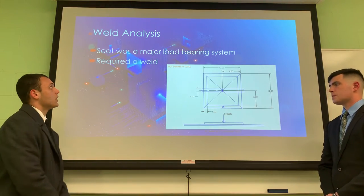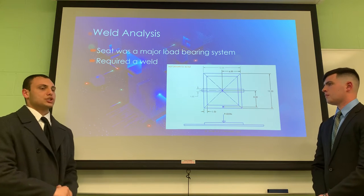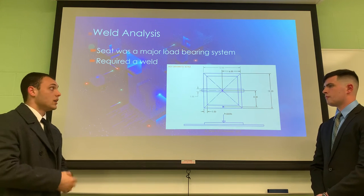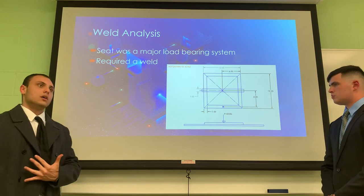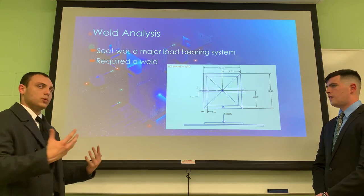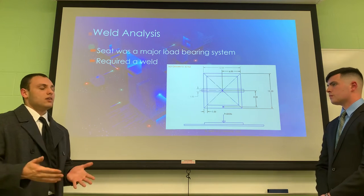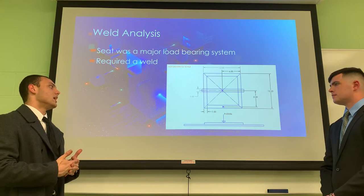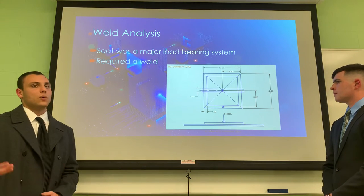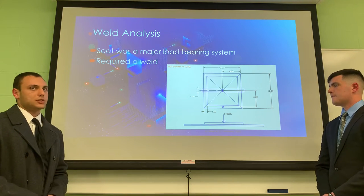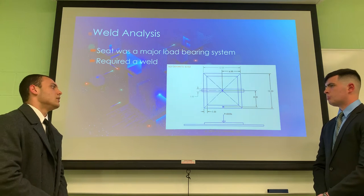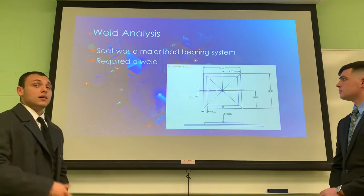Another analysis we want to talk about was the weldment analysis for the seat. We understood that the seat was going to be a major load-bearing structure, and we wanted to make sure it was secured no matter what. For example, we wanted to look at what would happen if the rider's weight was suddenly shifted to one side or the other. We looked at several geometry factors of the weld — the linear inches of weld, the volume of the weld, and the allowable shear stress on the weld — and we were able to determine that an eighth-inch fillet weld would be sufficient to hold the weight of the rider, 300 pounds total including the seat, on one side of the seat.